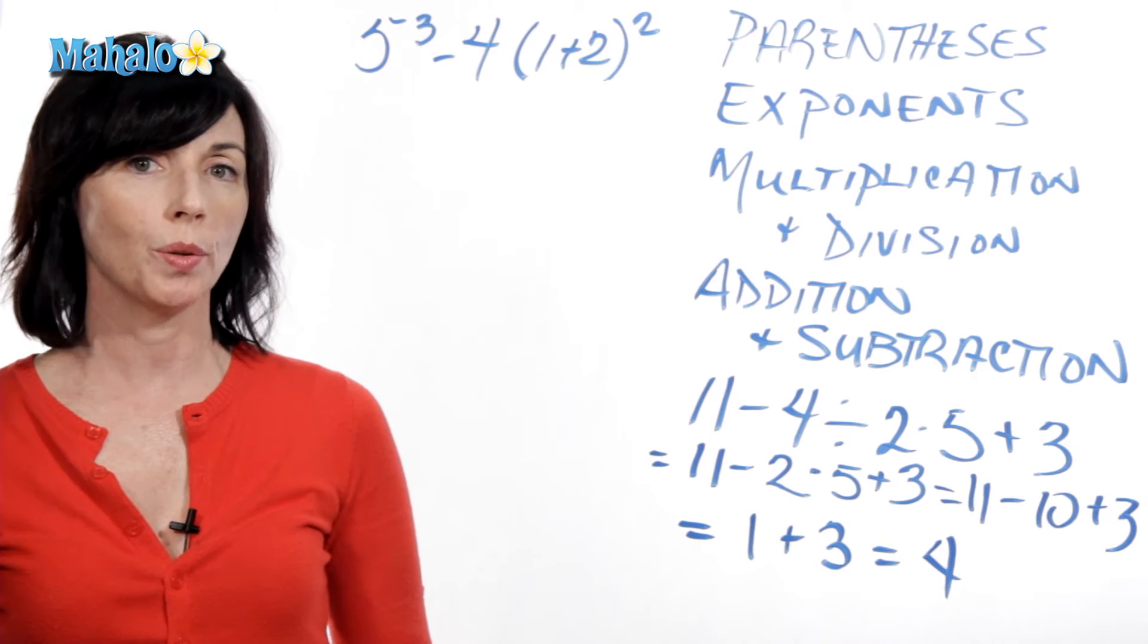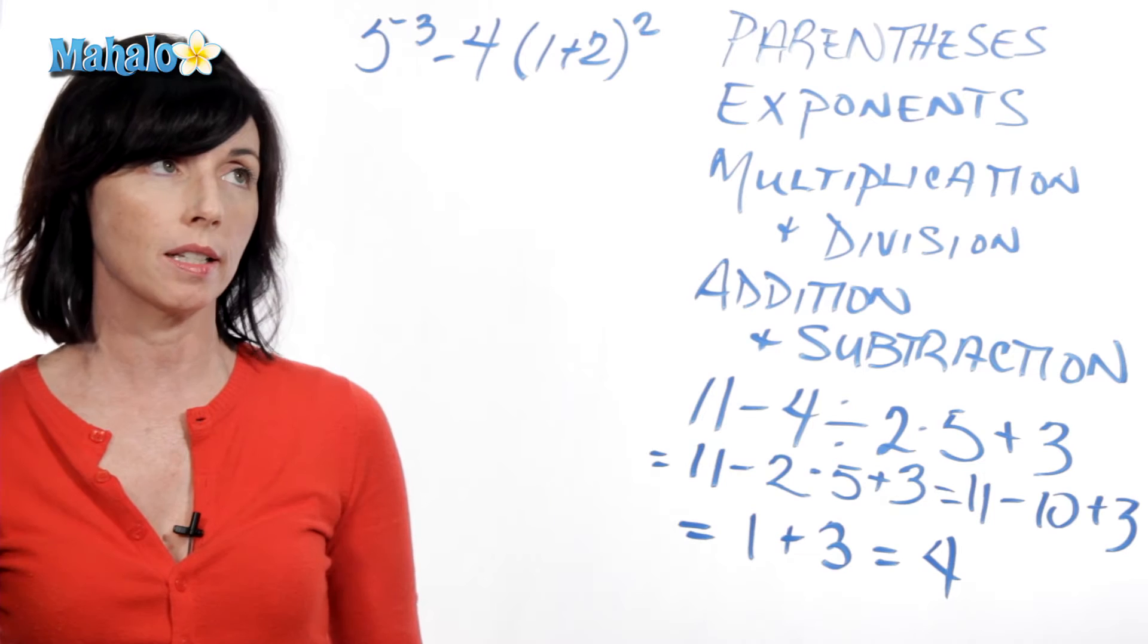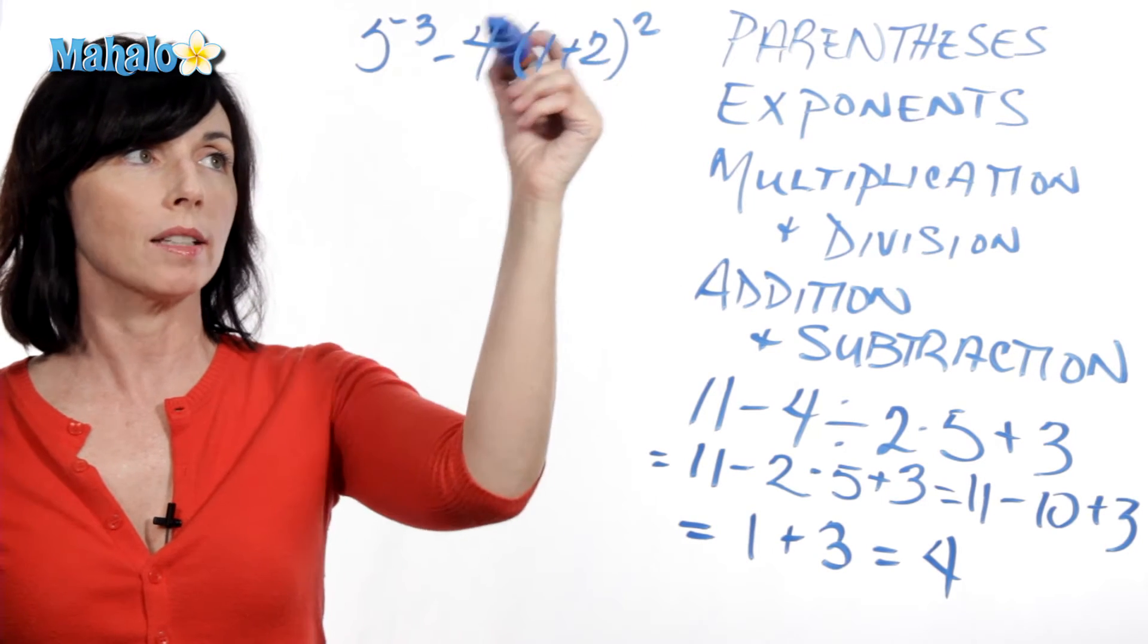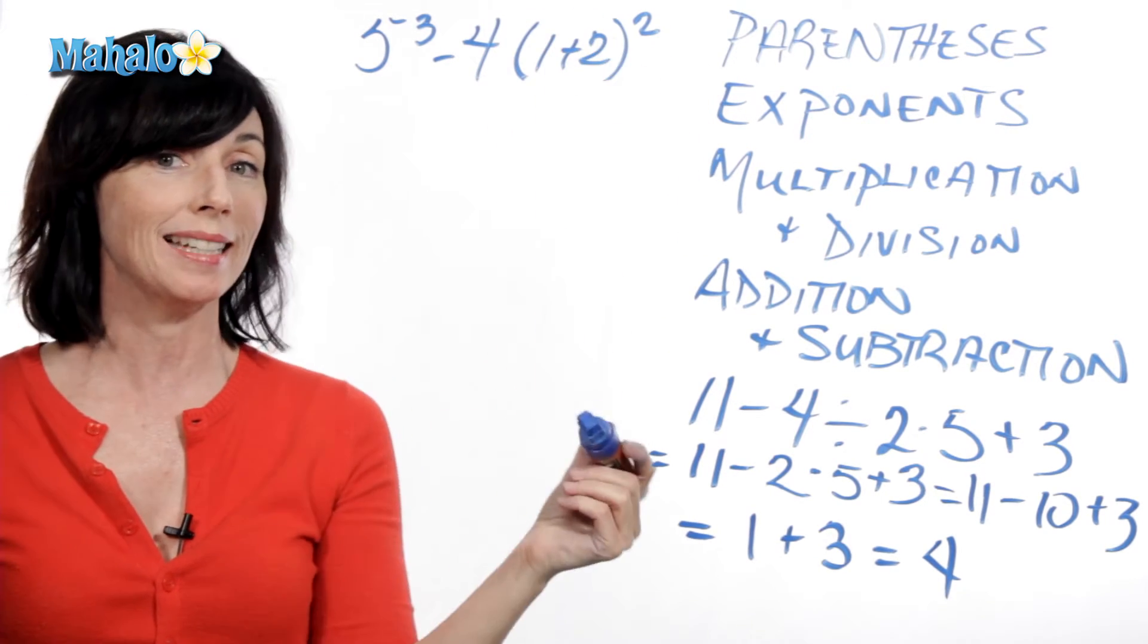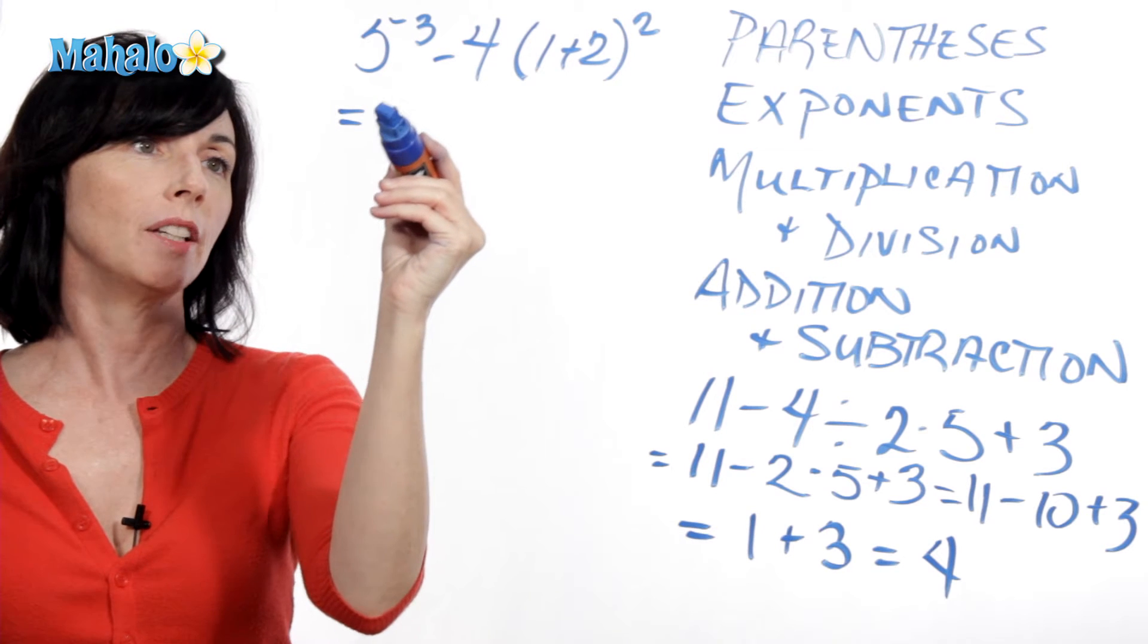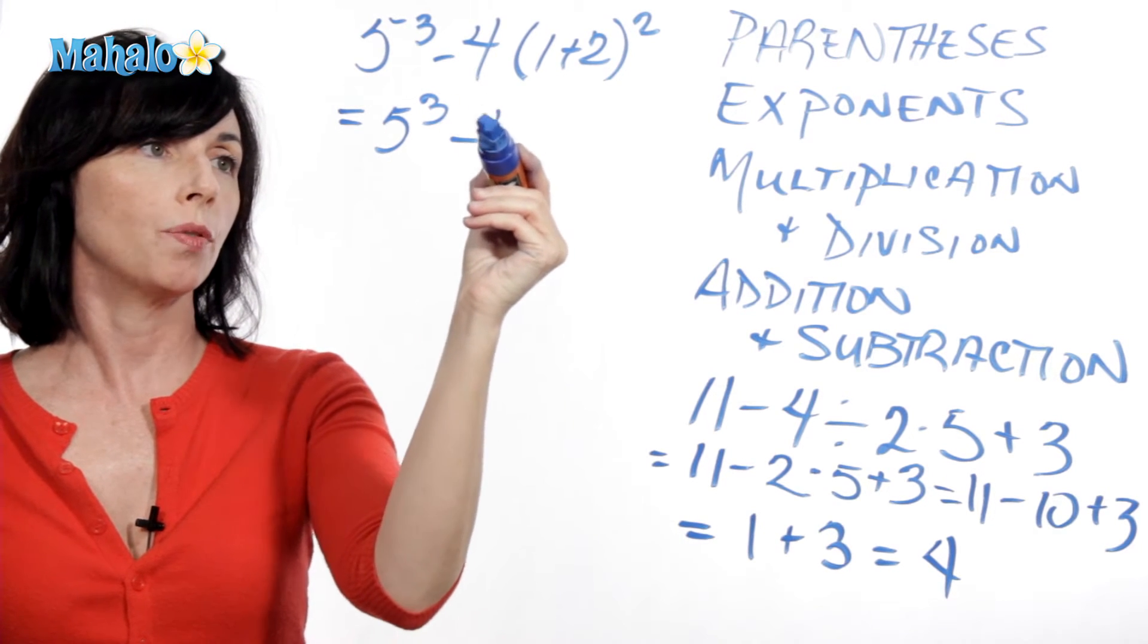The first thing you want to do is simplify anything inside of the parentheses. So don't worry about what's outside the parentheses, just simplify what's inside of them. So I'm going to leave my 5 cubed as it is, minus 4.